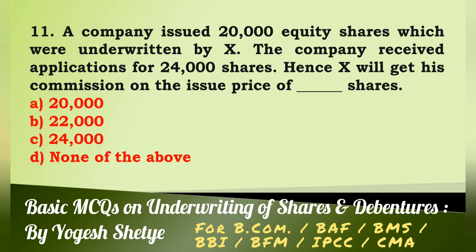Question 11: A company issued 20,000 equity shares which were underwritten by X. The company received applications for 24,000 shares.